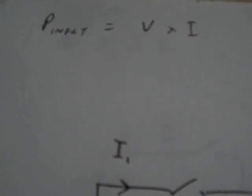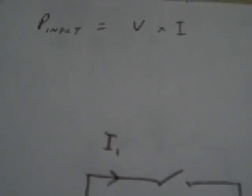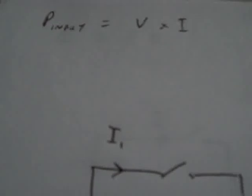The power input to this circuit is V times I. Voltage times current is input power. Voltage is measured in volts, current is measured in amps, and I would stress that it's current, not amperage. And if you multiply those two together, the product is power.